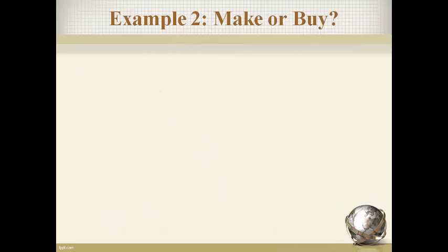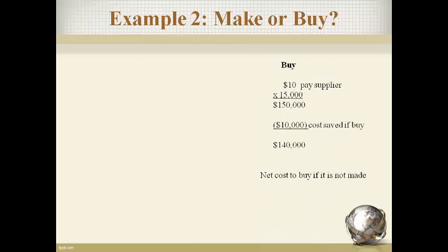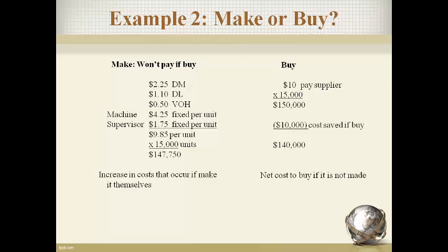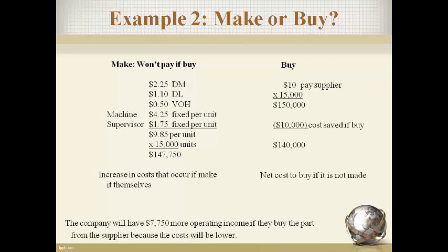A make or buy decision does not affect sales, so the contribution margin income statement is not used. On the buy side, the cost per unit and the warehouse costs that won't be paid are relevant — include only relevant items that will change. On the make side, list all the costs the company won't incur if the part is purchased from the supplier. Fixed costs are included in the cost per unit here because the quantity is not expected to change; you should almost always subtract fixed costs in total after computing the total variable cost. The additional cost to buy is lower than the cost to make, so the part should be purchased from the supplier.